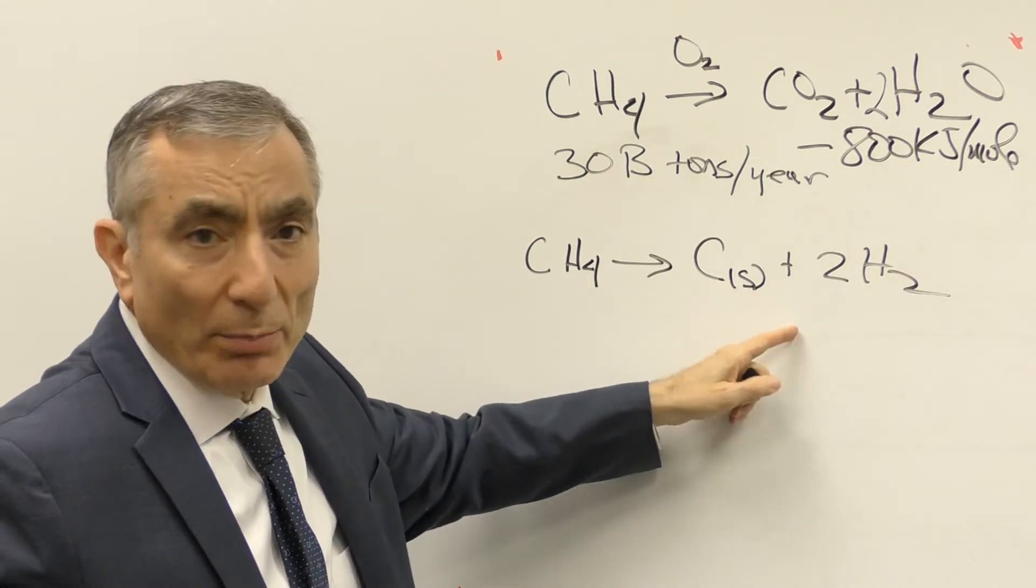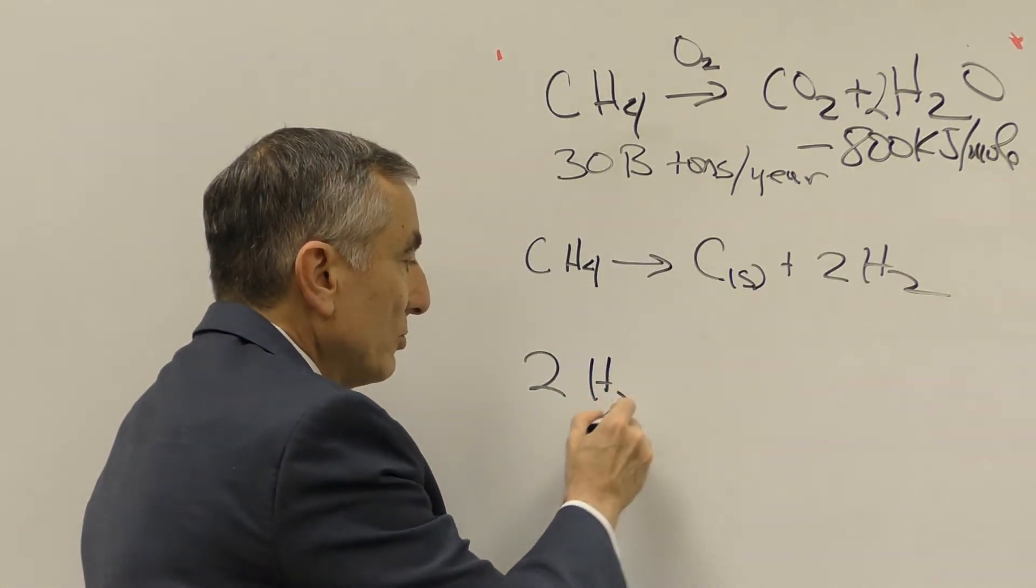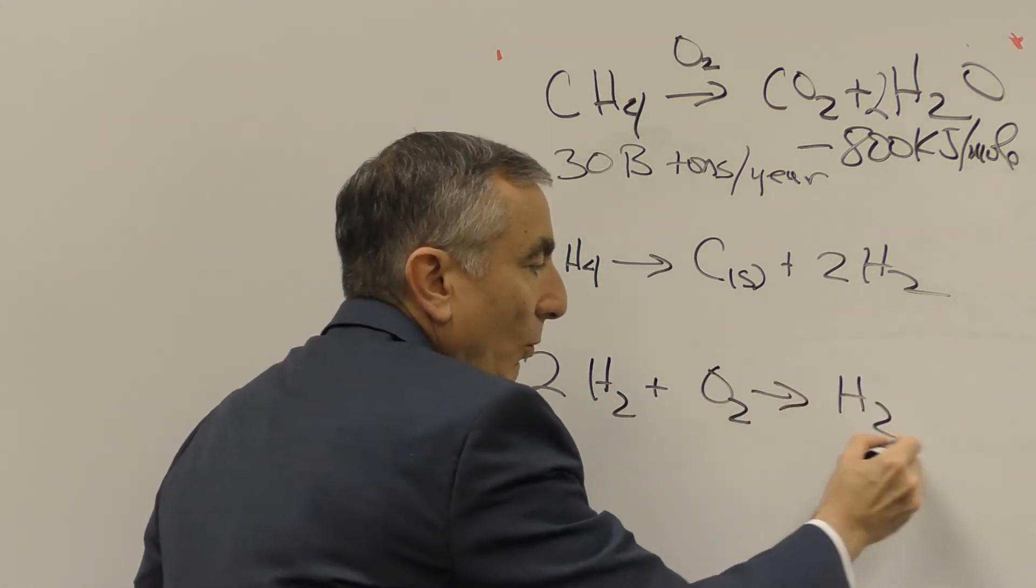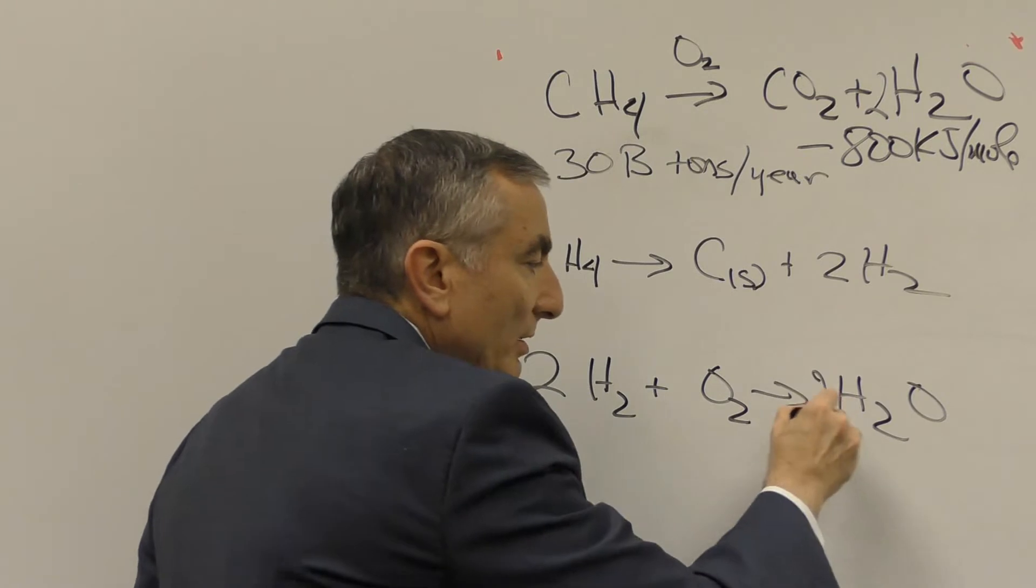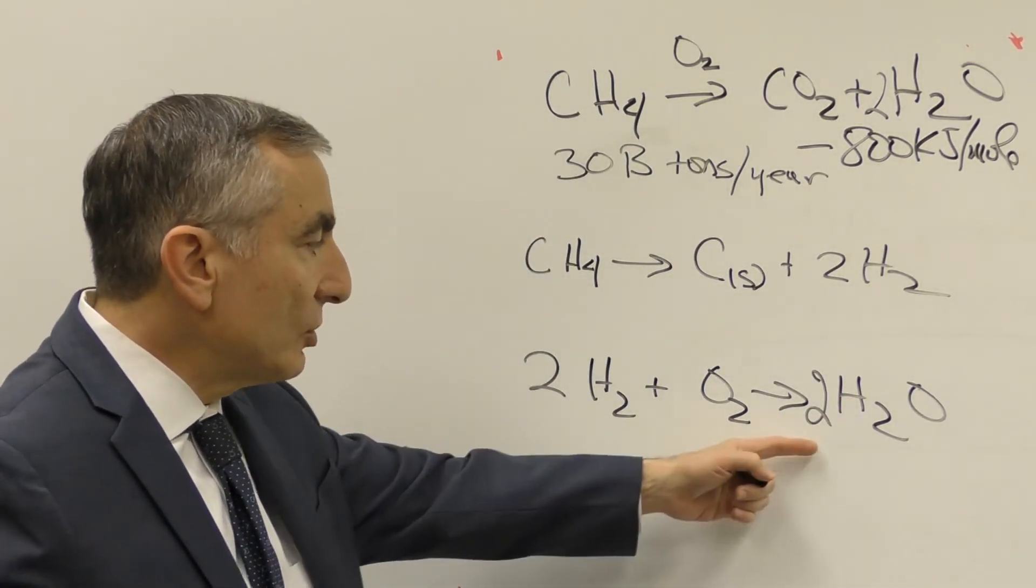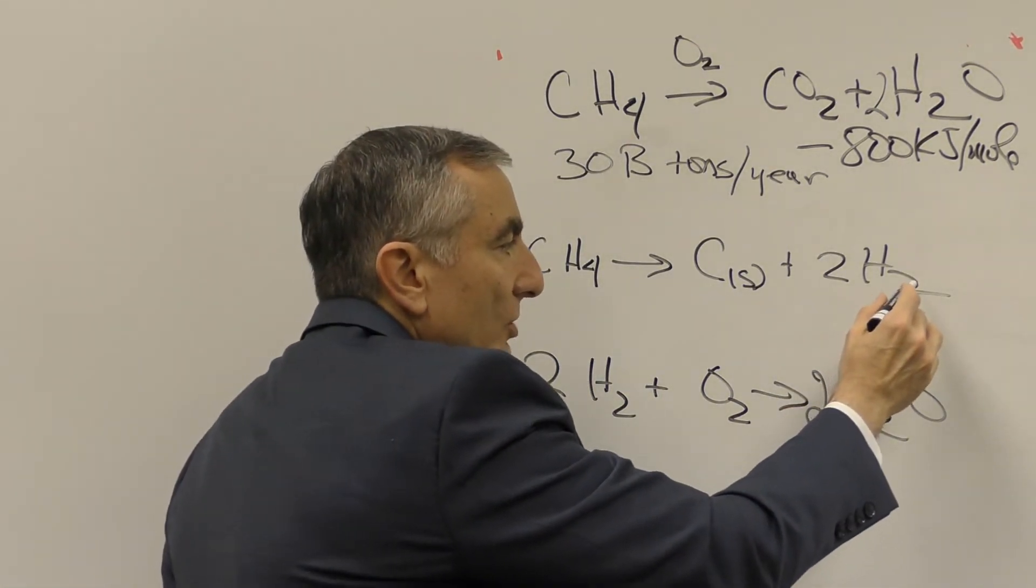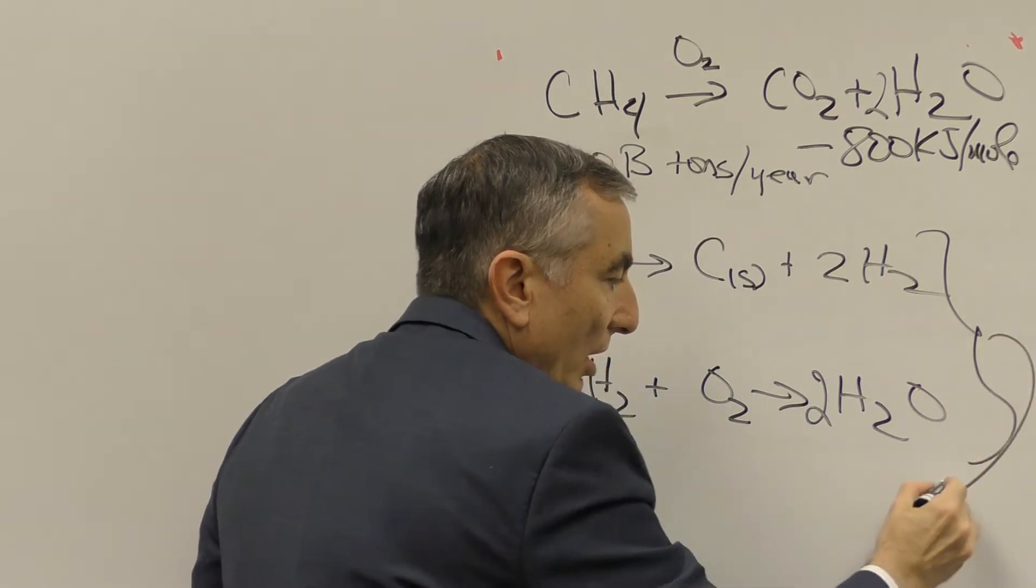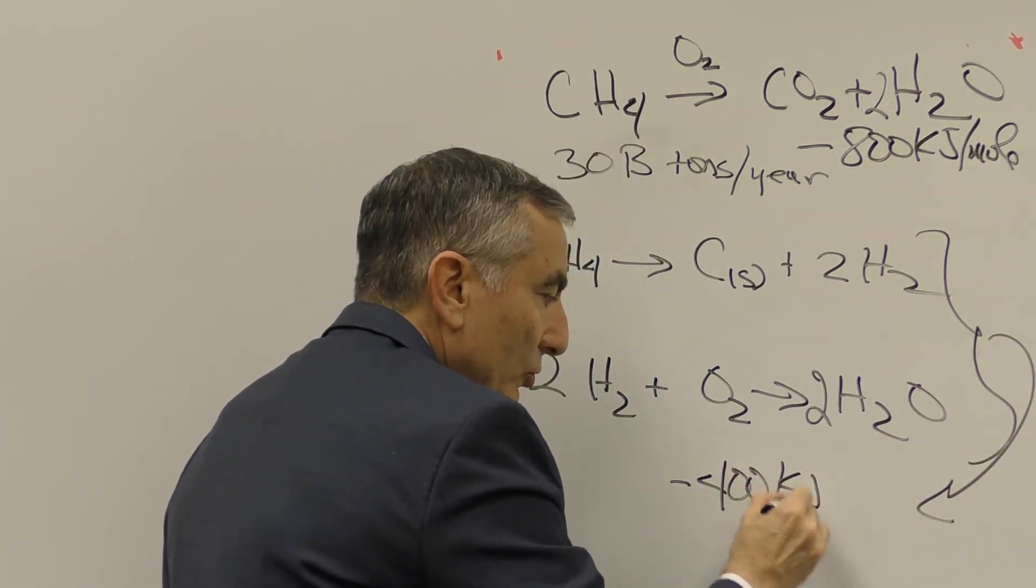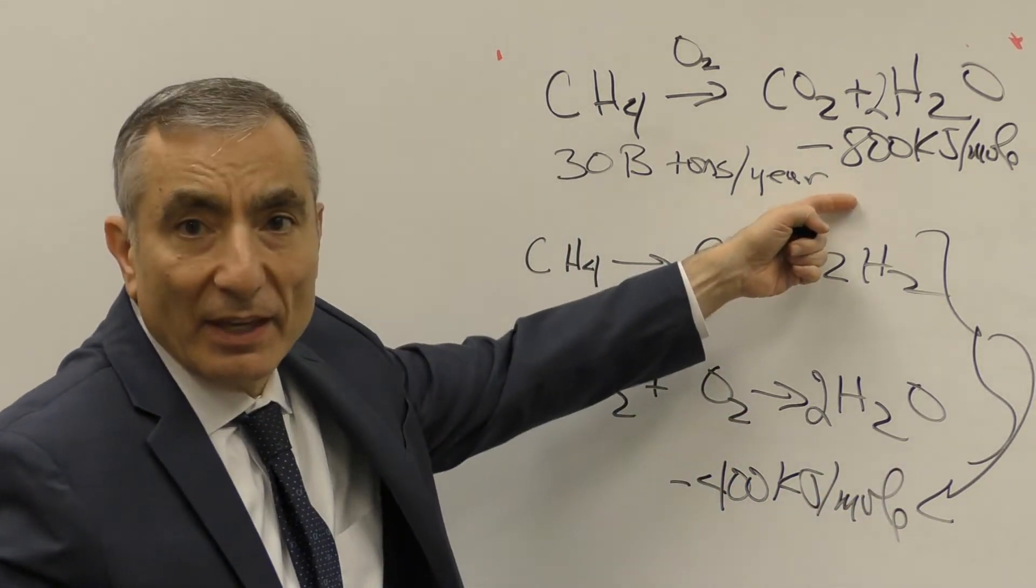If you do this, you're not blowing out any CO2, you're just making hydrogen and then you take those two hydrogens, you mix them with oxygen from the air and you make water. Your only product here is water. There is no CO2 emission. The energy content, these two reactions together, the energy content of this is about minus 400 kilojoules per mole. So it's half the energy that you had there.